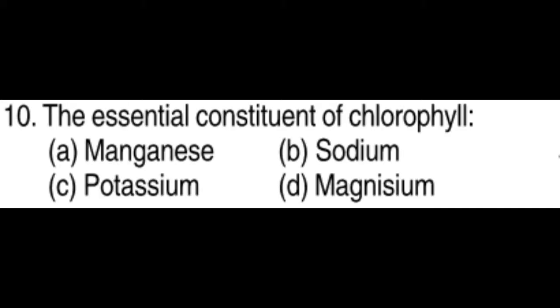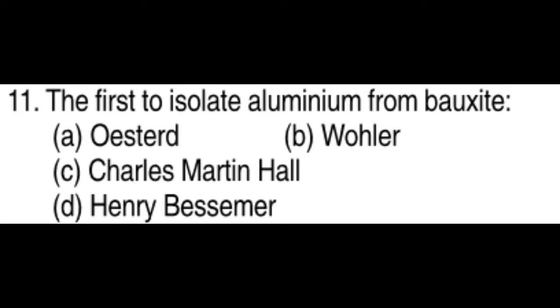The essential constituent of chlorophyll: Magnesium. The first to isolate aluminium from bauxite: Charles Martin Hall.